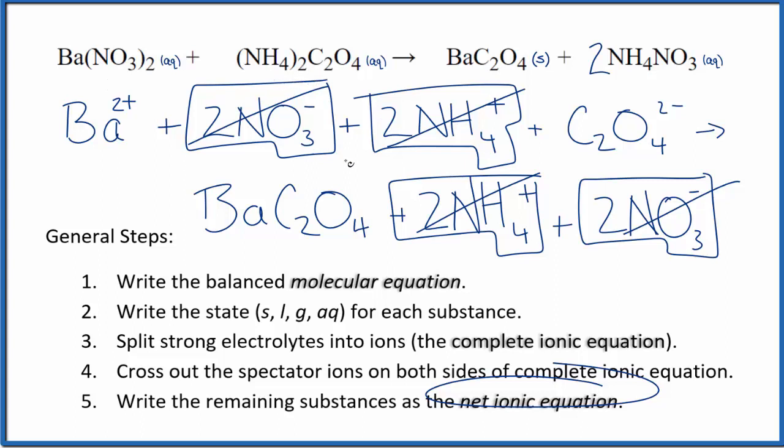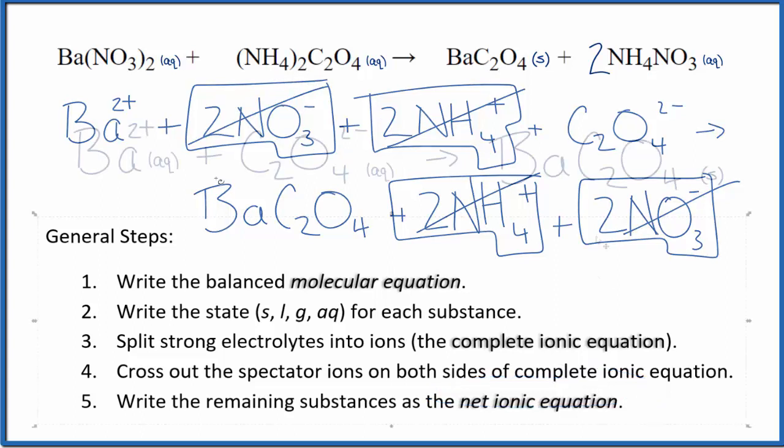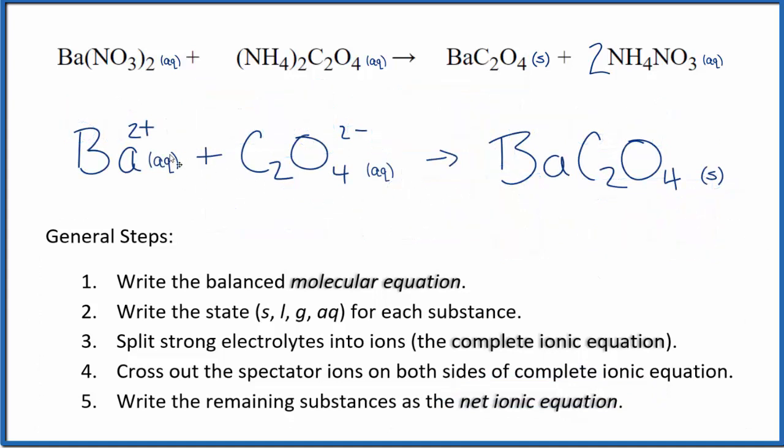I'll clean it up and write the states. So this is the balanced net ionic equation. We have charge conserved. We have a two plus and two minus, that gives a net charge of zero. And in the products we have this barium oxalate neutral compound, net charge of zero as well. So charges conserved.